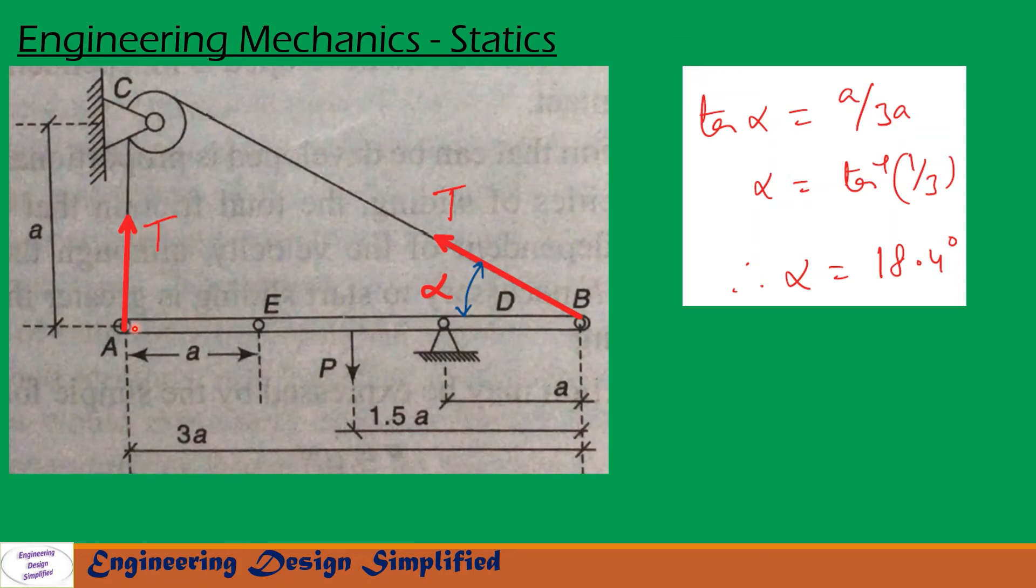We have here a right angle triangle A, C, B. Let us call this angle as alpha. From this right angle triangle, this height is A, this total length is 3A, this angle is alpha. So, we can write tan alpha equal to A by 3A. From this we can find alpha equal to 18.4 degrees.